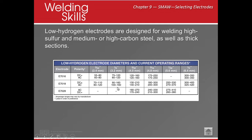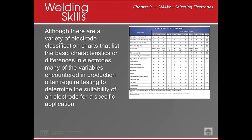Same thing for low hydrogen rods — 125 amps puts you right in the middle, but adjustments are still needed. Arc length should equal the diameter of your core electrode: 1/8 inch for a 1/8-inch rod, or 3/32 inch for a 3/32-inch rod. Your bead width should be two to two-and-a-half times the rod diameter — roughly 3/8 inch for a 1/8-inch rod.